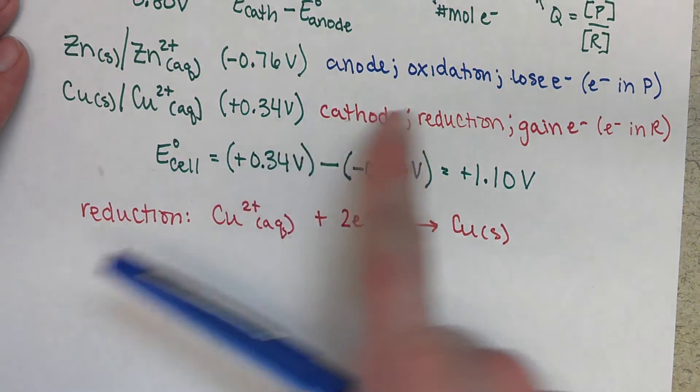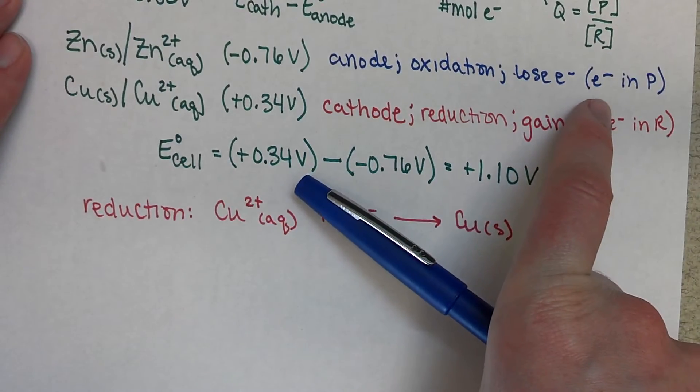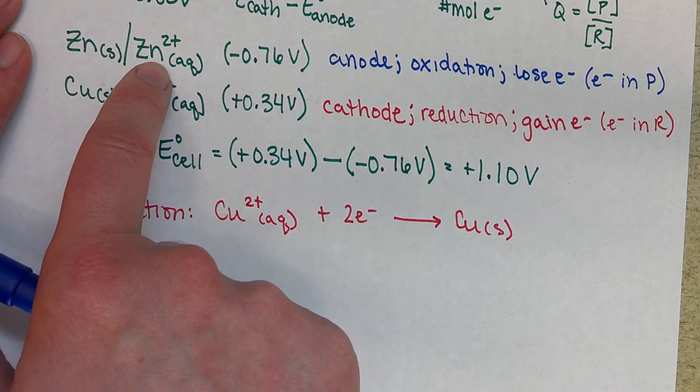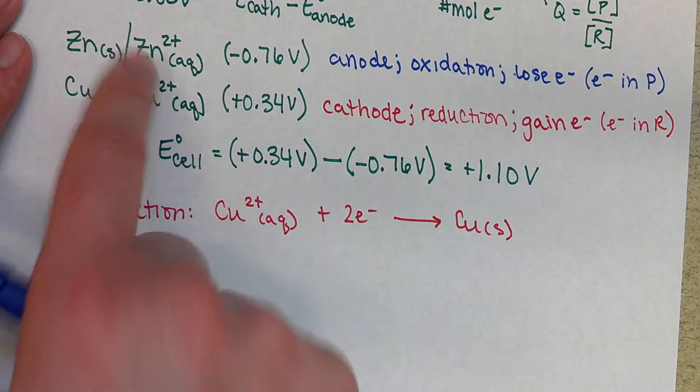Then for zinc, zinc is going to be losing electrons. Our electrons need to be in our products. So we're going to start with our zinc metal and lose those two electrons to form zinc two plus.